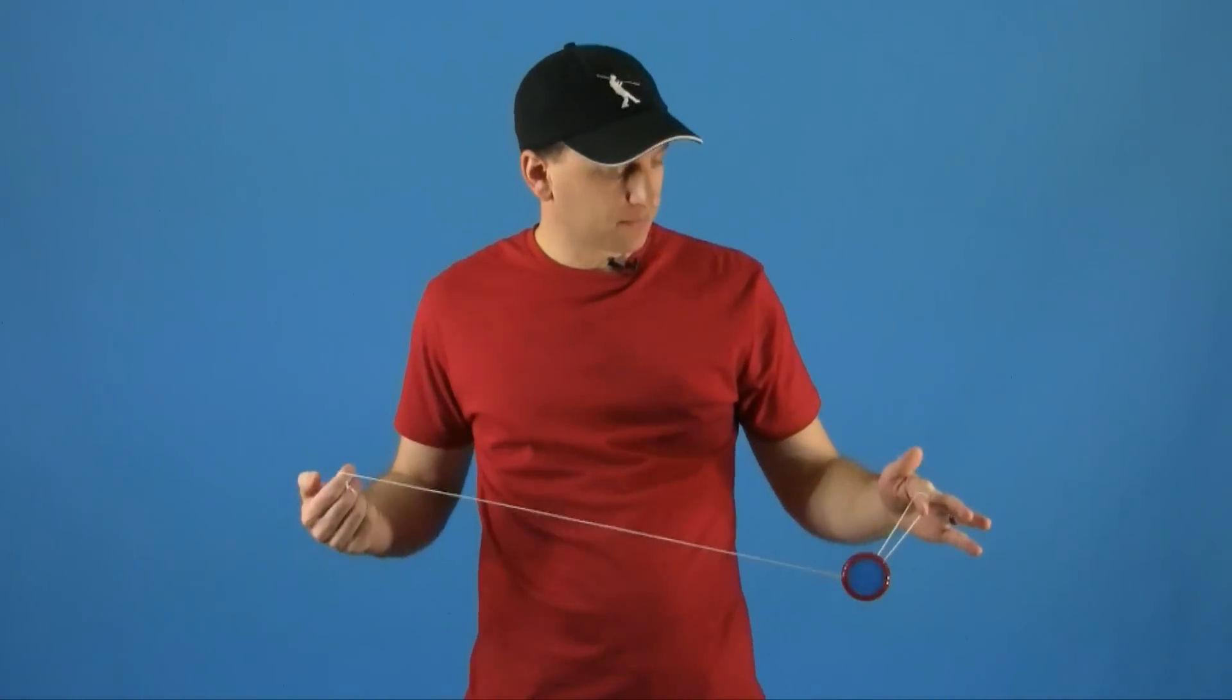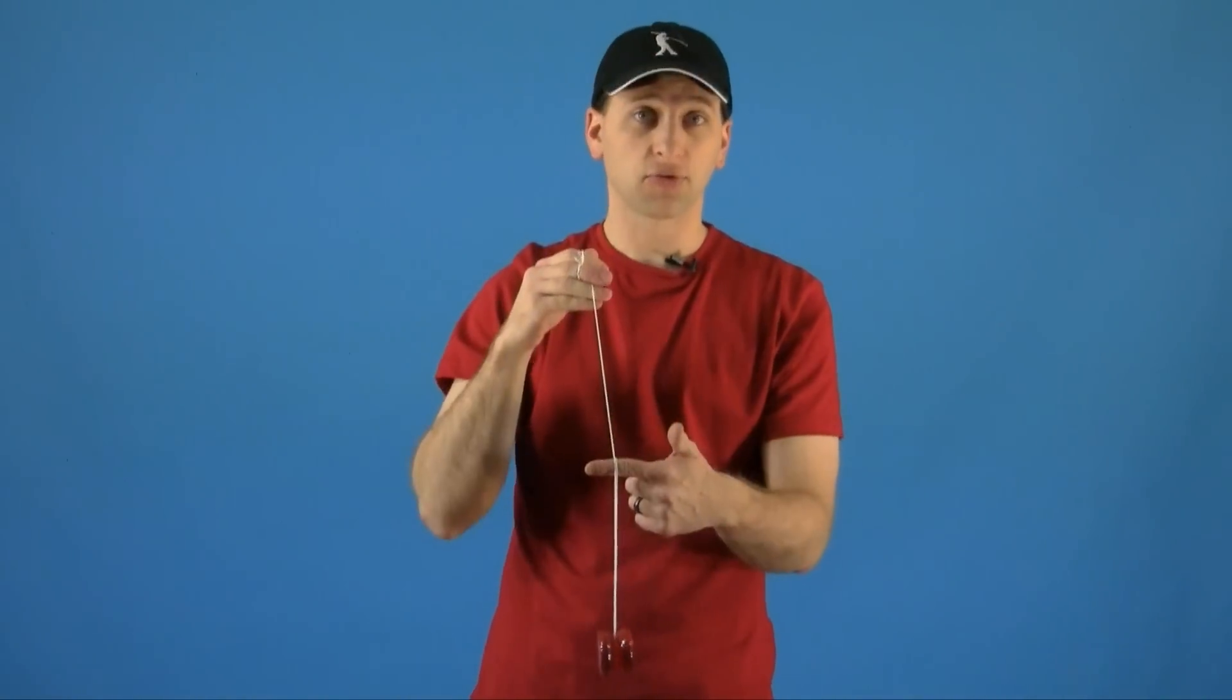When you throw the yoyo across your body, this is called the side mount. When you throw it in front of your body, this is called the front mount.